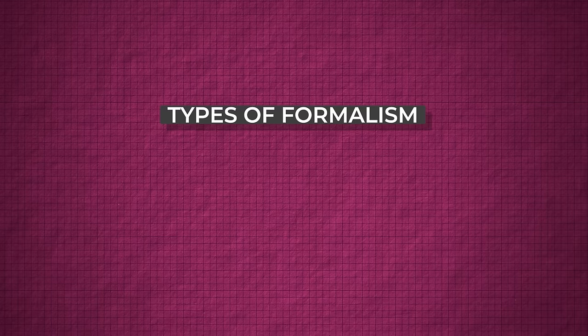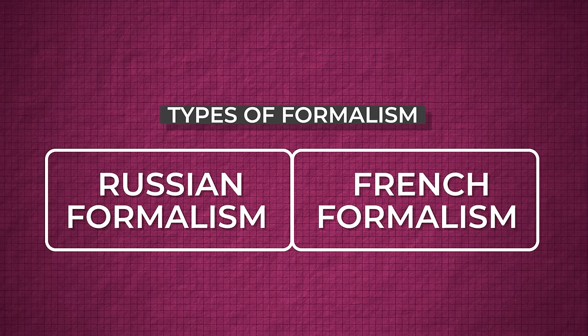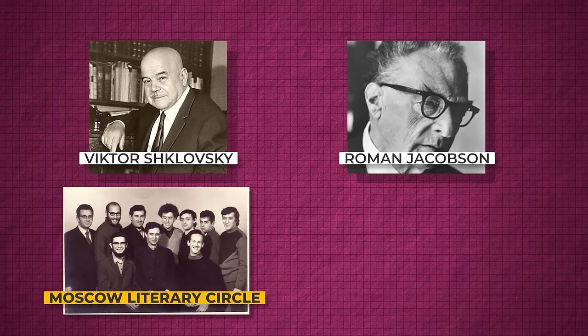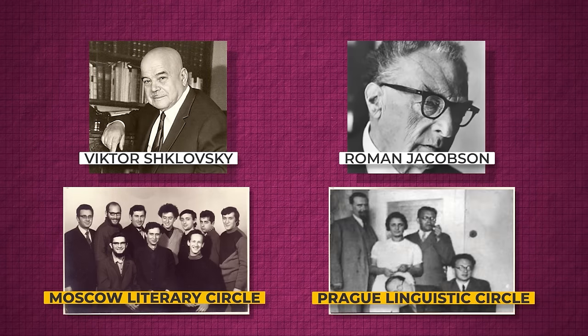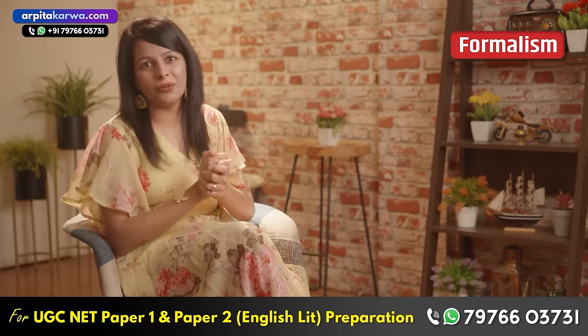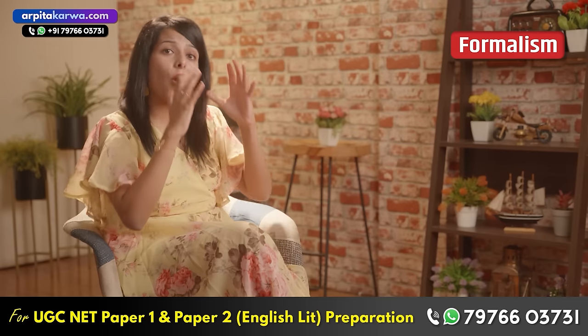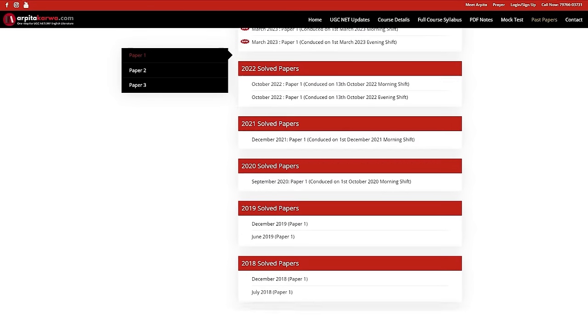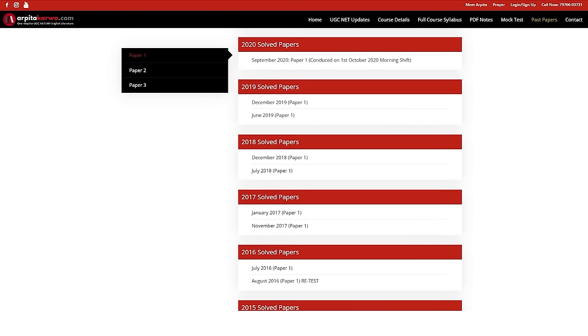There are two types of Formalism: Russian Formalism and French Formalism. The two main leaders of Formalism are Viktor Shklovsky from the Moscow Literary Circle and Roman Jakobson from the Prague Linguistic Circle. Since this is a crash course, I would not be able to get into the details. The detailed list of all these theories that you should study to clear UGC Net Paper 2 is available free of cost on our website arpitakarva.com.